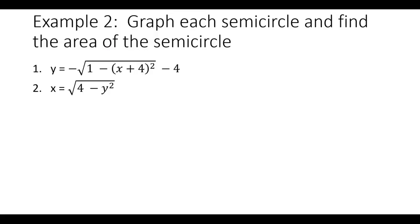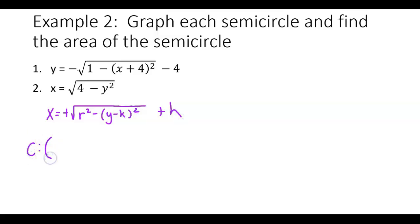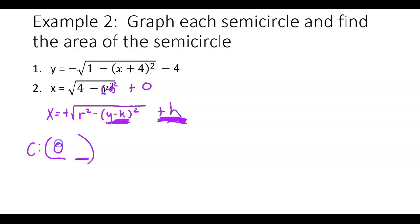Let's do another one. This one is in the form x equals a positive square root of r squared minus (y minus k) squared, plus h. What would my center be? The H gives our x-value and the K gives our y-value. The one outside we don't change sign, but the one inside we do change sign. In this case, we can think of it as y minus 0 squared plus 0, because any time you're missing H or K, they are zero — so both are zero here.